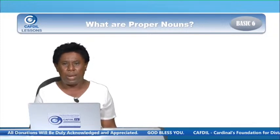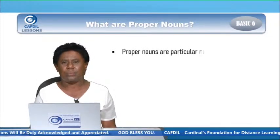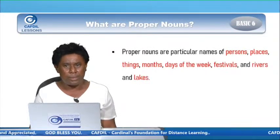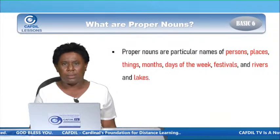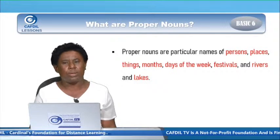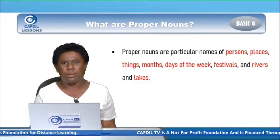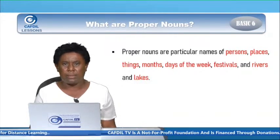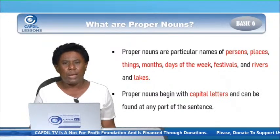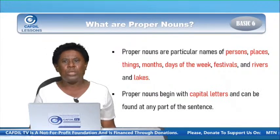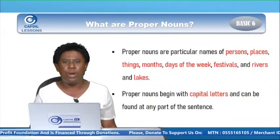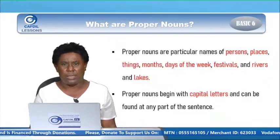And what are proper nouns? Proper nouns are particular names of persons, places, things, months, days of the week, festivals, rivers, and lakes. Proper nouns begin with capital letters and can be found at any part of the sentence.